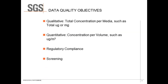The next important area to look at in our scope is our data quality objectives. We really have to match our objectives with the sampling tools and techniques we're using. The first key point is qualitative analysis — that is a total concentration per media, giving you a total micrograms or milligrams per media. Qualitative is very useful in directional sampling, where you're not as interested in the concentration but more in a relative value among your media.